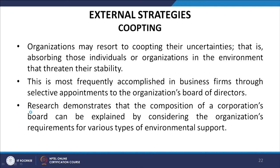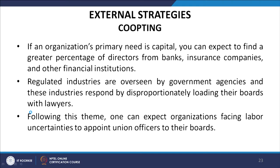Another external strategy is co-opting. Organizations may resort to co-opting uncertainties — that is, absorbing individuals or organizations in the environment that threaten their stability. This is most frequently accomplished through selective appointments to the organization's board of directors. Research demonstrates that board composition can be explained by the organization's requirements for various types of environmental support. If an organization's primary need is capital, you can expect a greater percentage of directors from banks, insurance companies and other financial institutions.